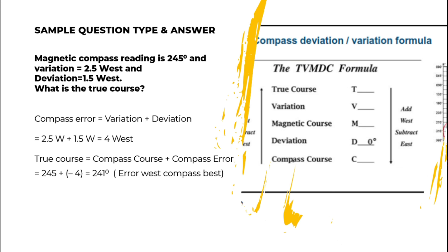Example question: The magnetic compass reading is 245°, the variation is 2.5° West, and the deviation is 1.5° West. What is the true course? First, calculate compass error: variation 2.5° West plus deviation 1.5° West equals 4° West, or minus 4°. True course equals compass course plus compass error: 245° plus (−4°) equals 241° true. Remember: error west, compass best.